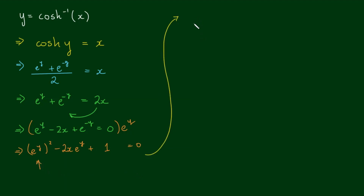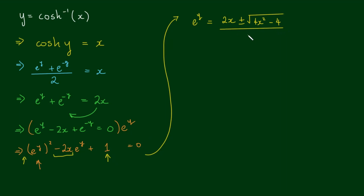We can say that e to the y, by the quadratic formula, is equal to: the term negative b would simply be positive 2x, so negative of negative 2x, plus or minus the square root of b squared — which will be 4x squared — minus 4ac, which is 4 times 1 times 1, equaling 4; all over 2 times a, which is 2 times 1, equaling 2. The square root reduces to 2 outside of the square root of x squared minus 1, and now we can cancel all the 2s, leaving e to the y equals x plus or minus the square root of x squared minus 1.